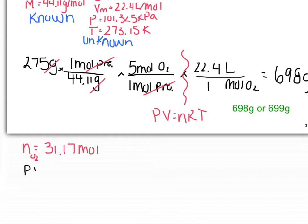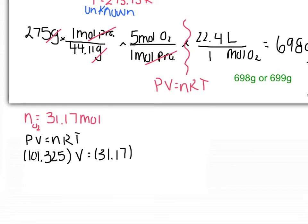Now, if we wanted to, we could use PV equals nRT. We solve for V: P is 101.325 kPa, times volume equals 31.17 moles, times R, times temperature in Kelvin, 273.15. Solving for V, we get a slightly different number based on rounding in our molar volume, so we get 699 grams. I would definitely accept either of these answers because both of them are just as correct, so don't worry about that.